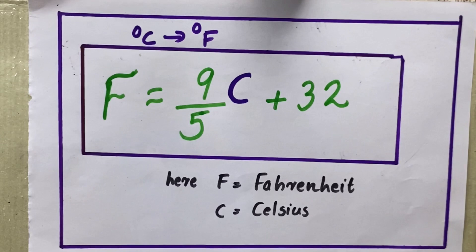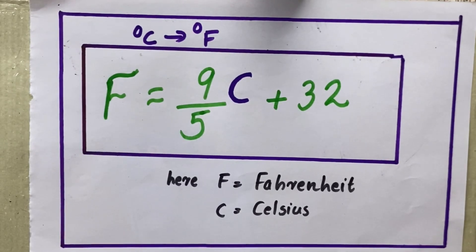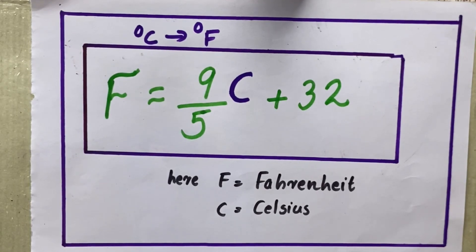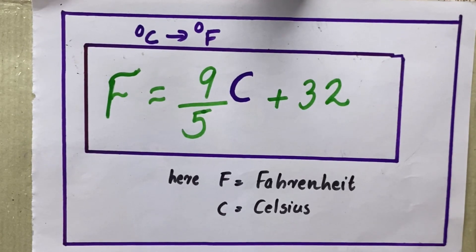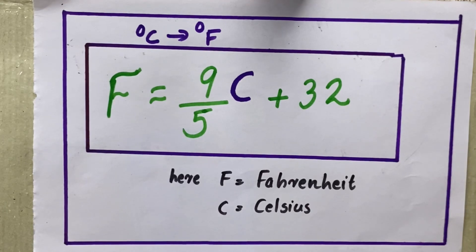We can interconvert these scales into another, that means degree Celsius to degree Fahrenheit, degree Fahrenheit to degree Celsius, degree Celsius to Kelvin, like that way. Now we are going to convert degree Celsius to degree Fahrenheit. What is the equation for that?